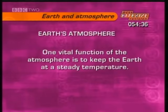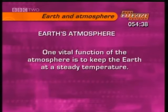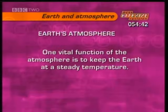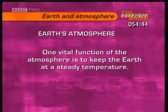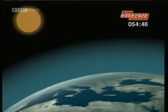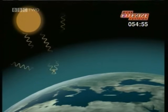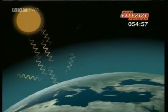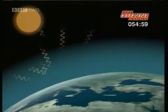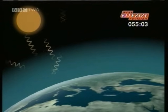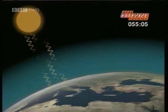One vital function of the atmosphere is to keep the Earth at a steady temperature. Watch the next clip and see how it works, and the special term we use to describe the process. The Earth's atmosphere helps it to retain energy, which arrives from the Sun in the form of electromagnetic waves. Most of these waves have very short wavelengths, like the ultraviolet radiation which gives you a sun tan. Some radiation is reflected back into space, but most of it is absorbed by the Earth's surface. This has a warming effect.